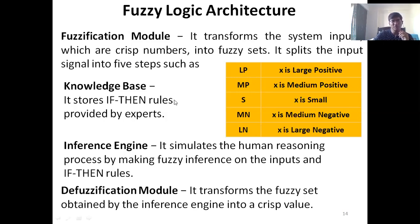The second important component of a fuzzy system is the knowledge base, which is nothing but a set of rules — normally in the form of if-then rules. If X comes in, that X can be among any of the categories, and the rules define what has to be done with that particular value. The entire knowledge base is represented by these if-then rules, which can also be called production rules.